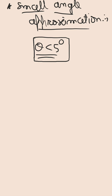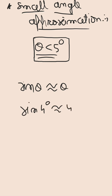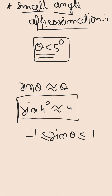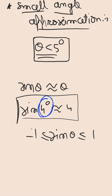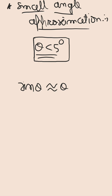Let's see what the approximation is. If theta is less than 5 degrees, then sine theta is nearly equal to theta. But a question arises: if we are asked the value of sine 4 degrees, it would be nearly equal to 4 — but we know sine theta is between -1 and 1. This formula applies when theta is in radians, not in degrees. We need to first convert to radians, then we can apply sine theta ≈ theta.